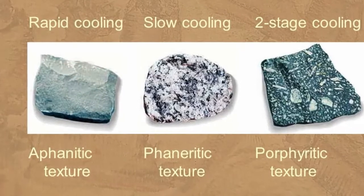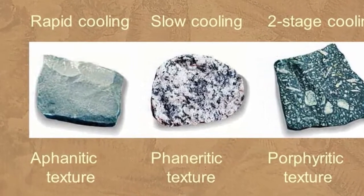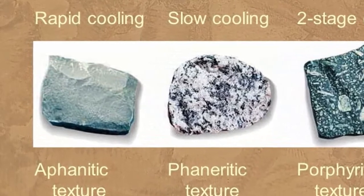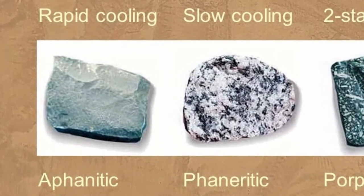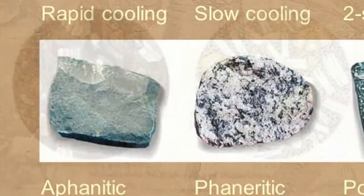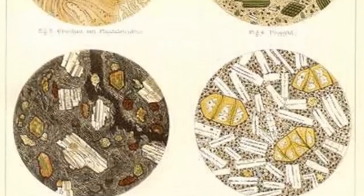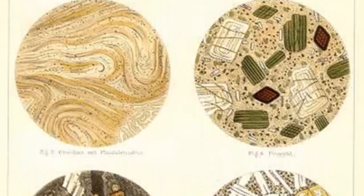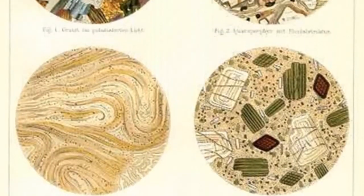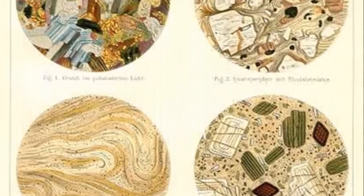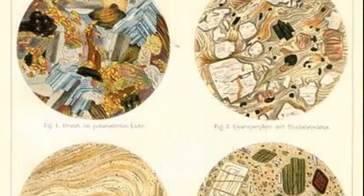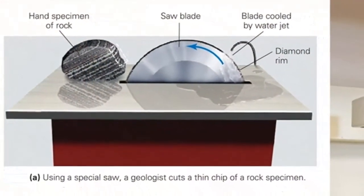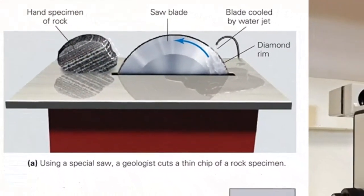The etymology of this word: 'a' means not, and 'phaner' means visible. By definition, the crystals that make up an aphanitic rock are so small that individual minerals can only be distinguished with the aid of a microscope. Because mineral identification is not possible, we commonly characterize fine-grained rocks as being light, intermediate, or dark in color.